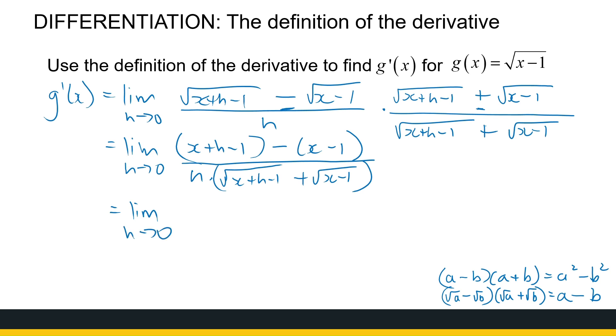What's happening in the numerator? x minus x minus 1 plus 1. I'm left with just the h there and the h in the denominator. Square root of x plus h minus 1 plus the square root of x minus 1.